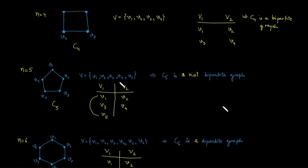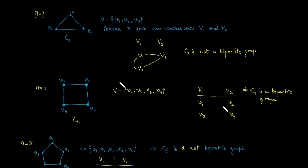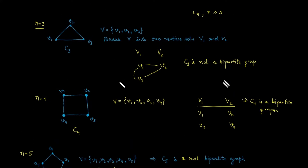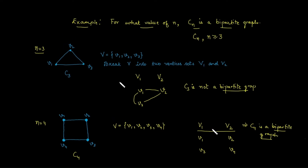We can observe that for n equals 4 and n equals 6, the graphs are bipartite, whereas for n equals 3 and n equals 5, they are not bipartite. So we can conclude that Cn is a bipartite graph for even n, provided n is greater than or equal to 2.